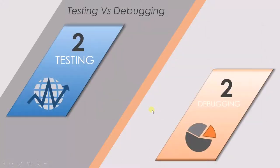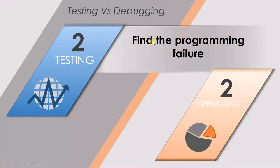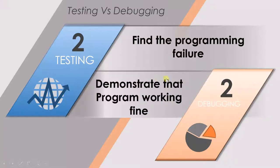The second point is that in testing, we find the programming failures — we find the failure with respect to the code or software. Whereas in debugging, we demonstrate that the program works fine. If a failure is reported to the debugging team, they analyze it, fix it, and demonstrate that the program is working fine. So testing is to find the failure, whereas debugging is to demonstrate that there is no failure.